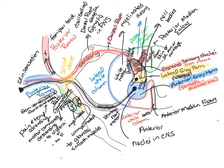For the exam, you need to know: sensory and motor information from your back travels through the posterior ramus; information from your front or sides travels through the anterior ramus; and motor commands for your viscera travel through the rami communicantes.